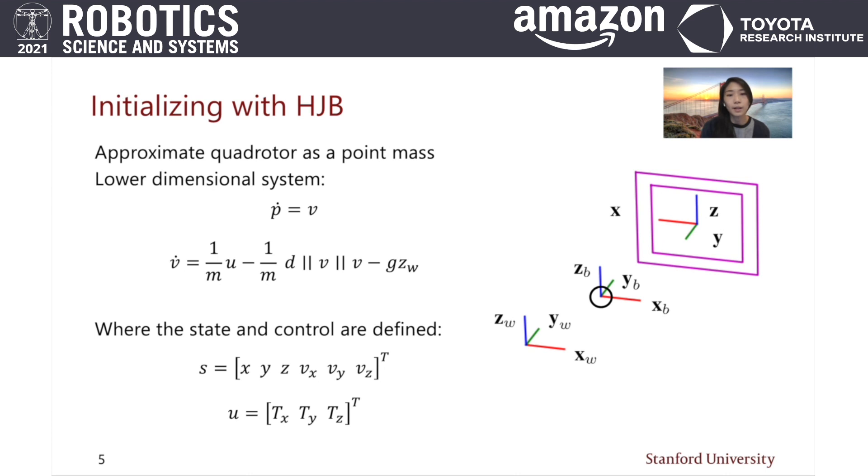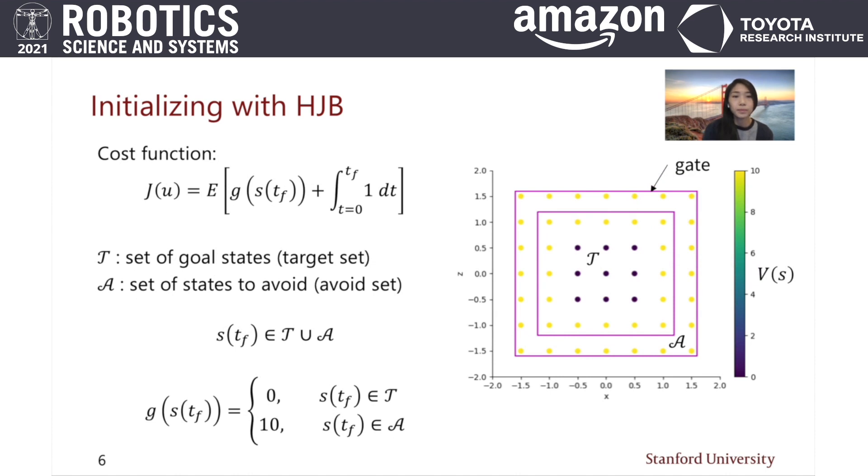This lower-dimensional model allows us to compute the solution to the HJB partial differential equations. We define the HJB problem as having a terminal cost at the gate where a target set leads the quadrotor through the gate center, and the avoid set defines the gate frame.